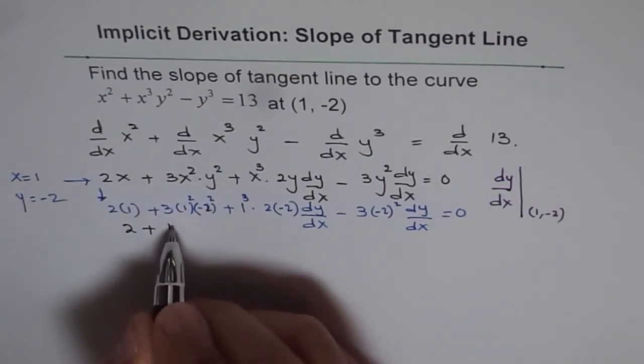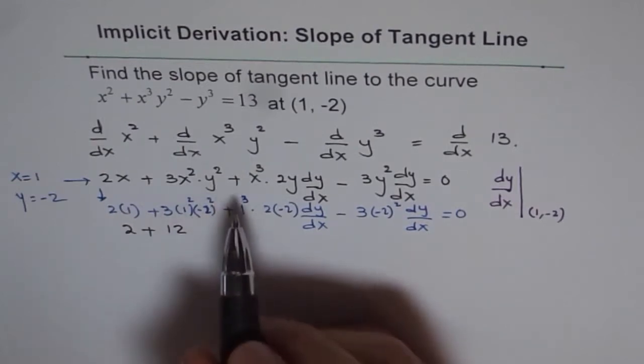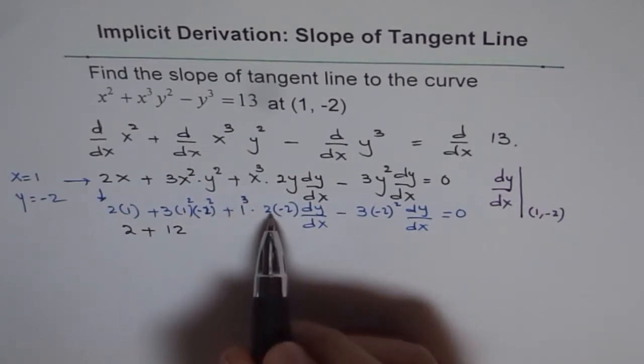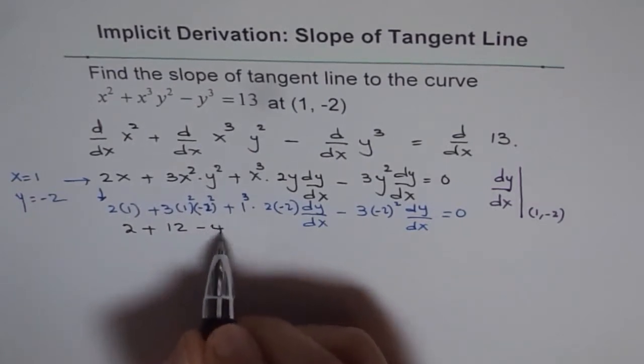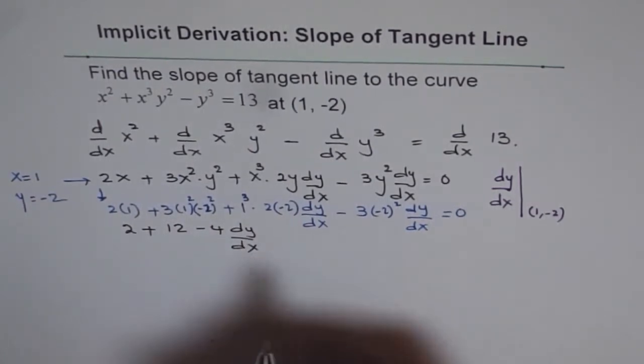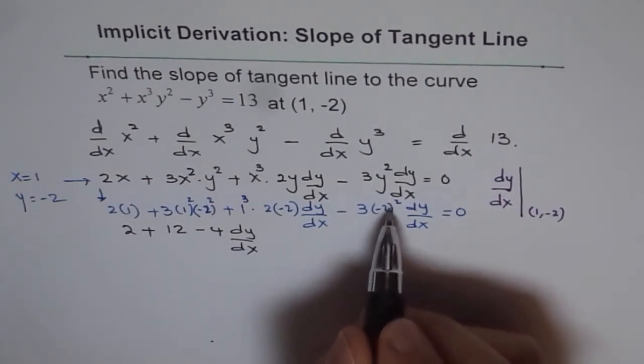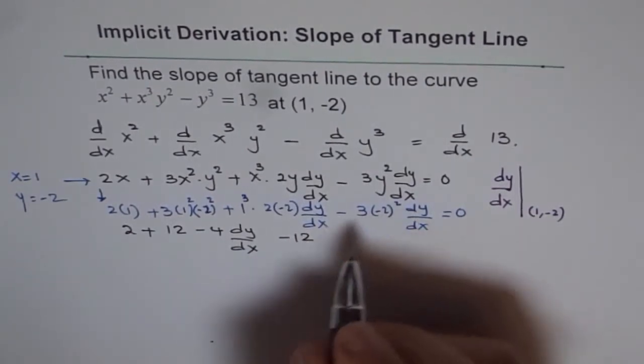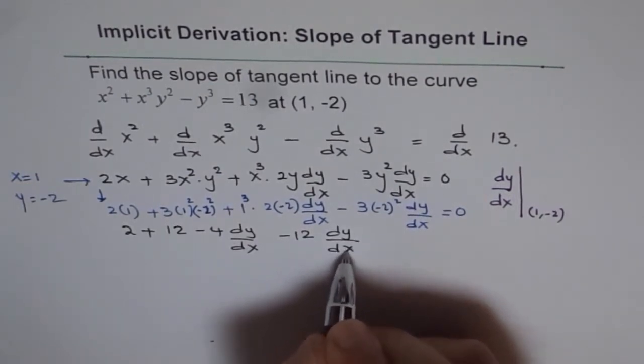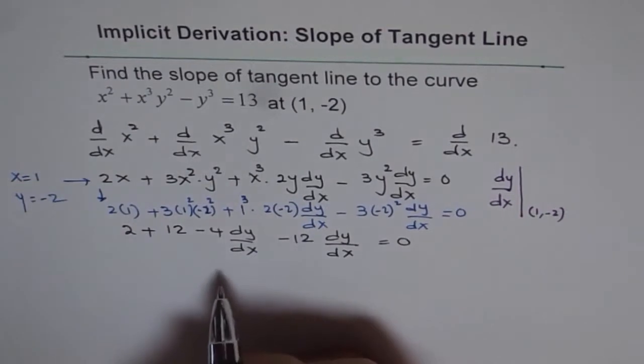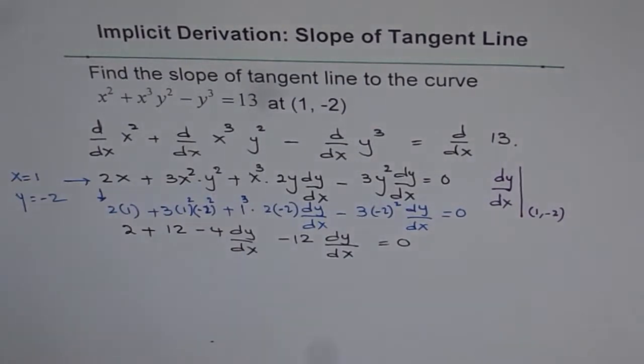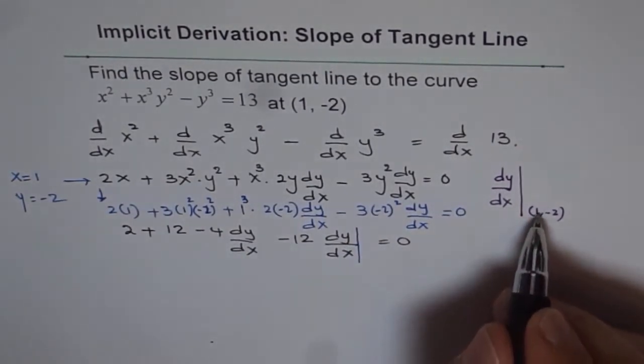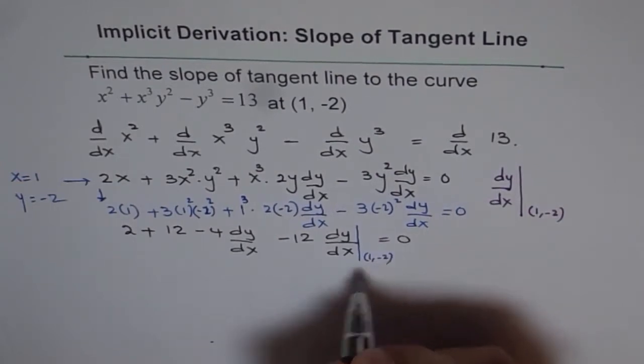For that, 2 + 3×1×(-2)² which gives me 4, 4×3 is 12. So we get 12, and 1³×(-2) is -4. So we get -4 dy/dx. (-2)² minus is positive. So we get -12 dy/dx = 0. Now we can combine these terms and then find the slope. Now this dy/dx, as you know,